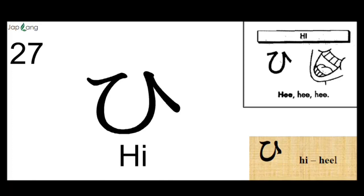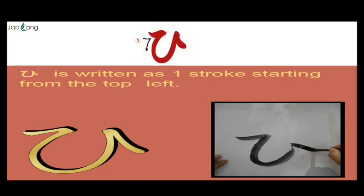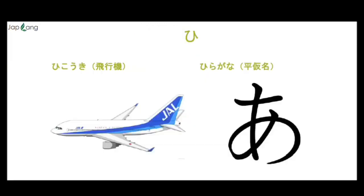Next is HI. HI as a heel. HI is written as one stroke, starting from the top left. HI as in Hikoki — that is aeroplane. Or Hiragana — H, I, R, A, G, A, N, A — like that.